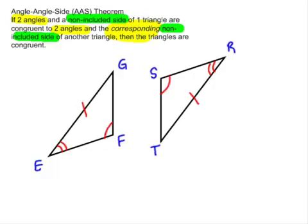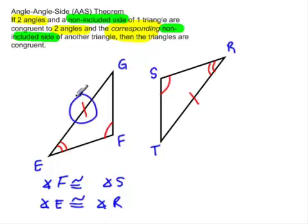As we can see here in our diagram, we have angle F. Angle F is congruent to angle S. We also have that angle E is congruent to angle R. Now, we have two congruent sides. Now, what do we mean by corresponding?